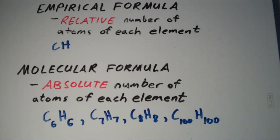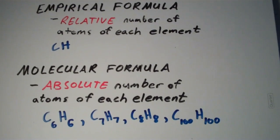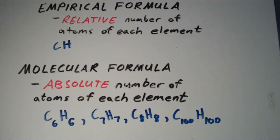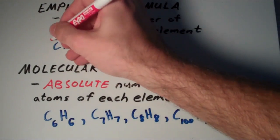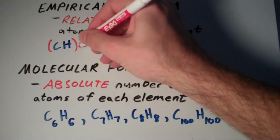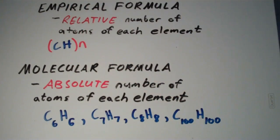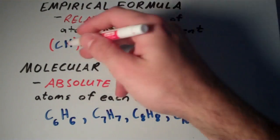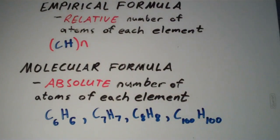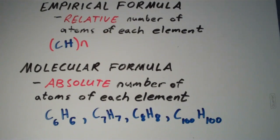The molecular formula is always an integer multiple of the empirical formula. If I multiply the empirical formula by N, which is just an integer 1, 2, 3, 4, etc., then I'll get the molecular formula.